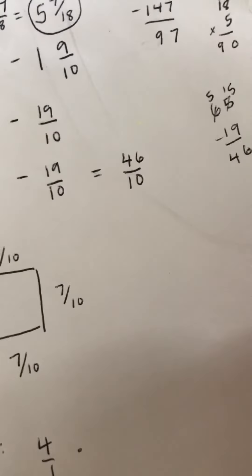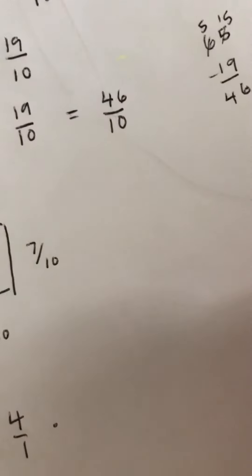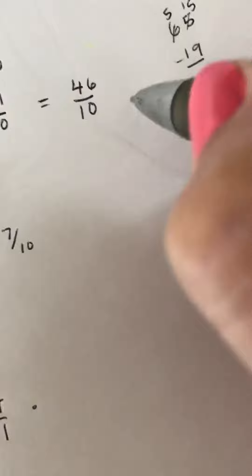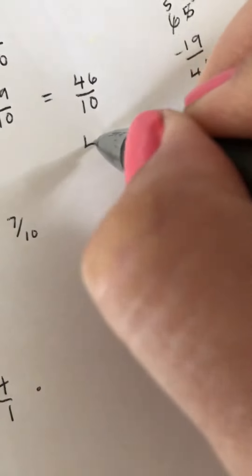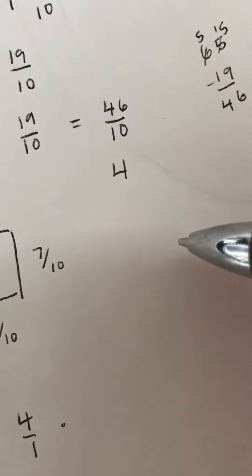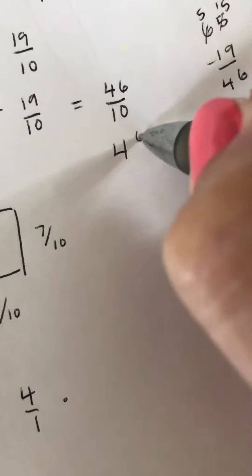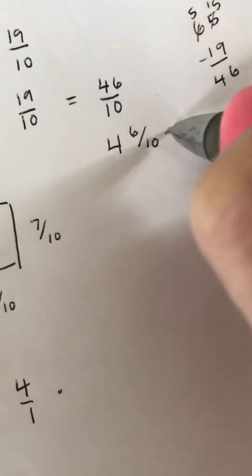So that's 46 over 10. We need that as a mixed number. So 10 goes into 46 four times. And so 10 times 4 is 40. So that means there's 6 left over. Denominator will be 10.